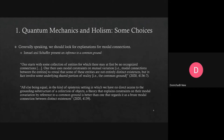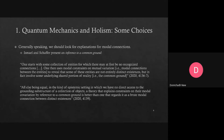Ismael and Schaffer propose that generally speaking we ought to look for explanations for modal connections, and the explanation they propose is what they call an inference to a common ground. The reason why these electrons are modally connected is because each of them is grounded in a further distinct entity, which is in fact the entire entangled system. Grounding is a worldly relation that underlies metaphysical explanations. Crucially, it's asymmetrical — as Ismael and Schaffer assume — and it takes us from the more fundamental to the relatively less fundamental.